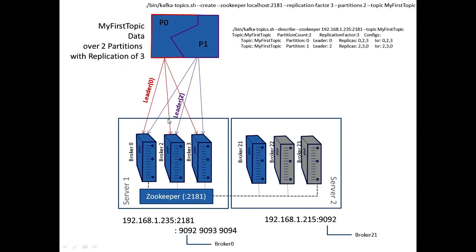I've got some data here in my first topic. Following the red lines you can see leader 0, so that's broker 0, and then broker 2 and broker 3 as part of that set. Towards the top right is the command that created all of this — the create command against that particular ZooKeeper, replication factor and partitions, creating that particular topic. That's the daemon on the bin directory onto Kafka and Kafka Topics. So that creates two partitions and three lots of replication.